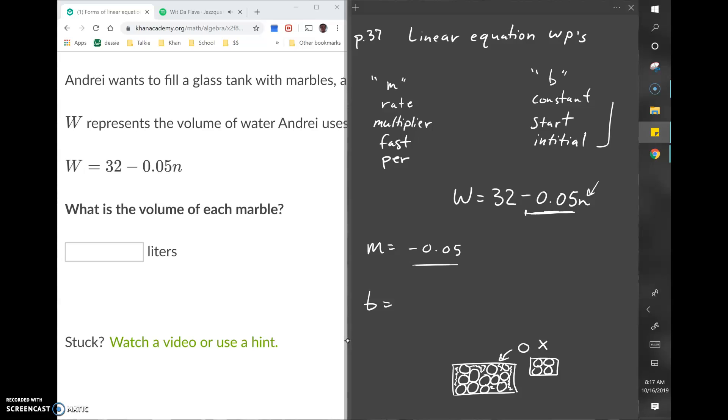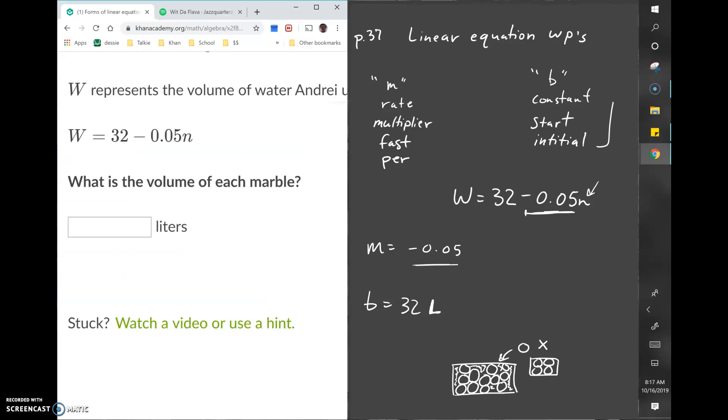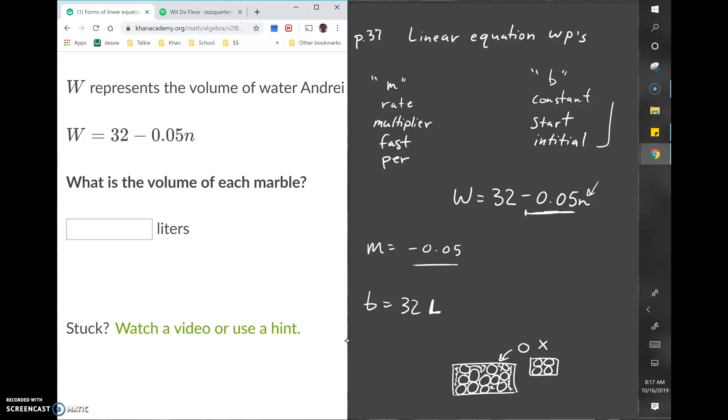The B value is the constant, and in this case that represents 32, and it must be liters. This glass tank started with 32 liters, and then each time a marble is put in, that marble takes up 0.05 liters of space.